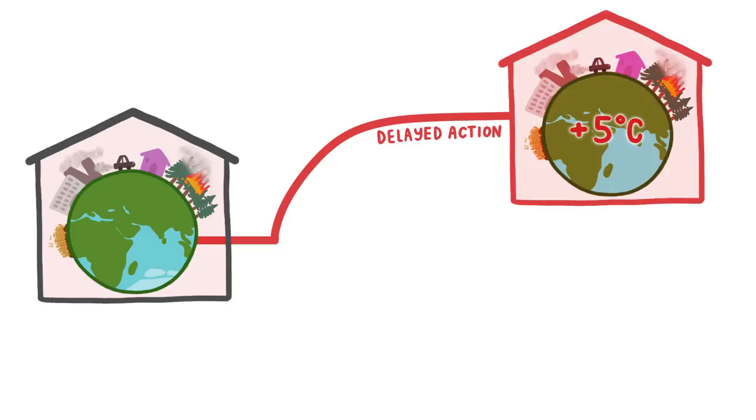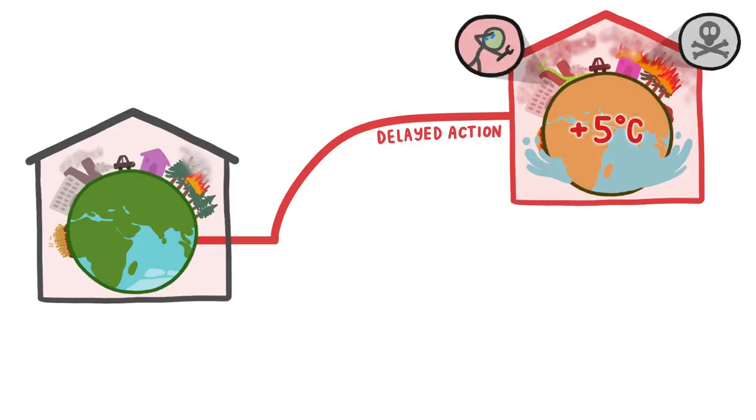If we do nothing to stop climate change, our collective house, Earth, will warm by as much as 5 degrees Celsius, which will cause more destruction from floods and fires, decrease crop yields due to droughts, and increase labor costs and mortality.